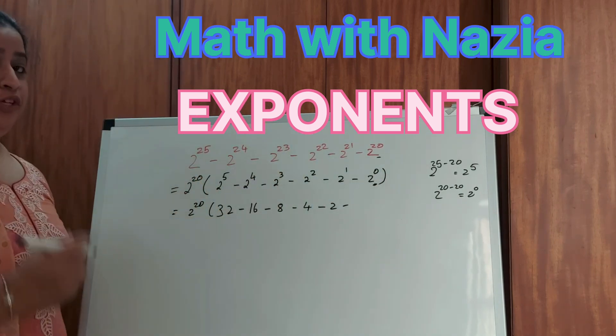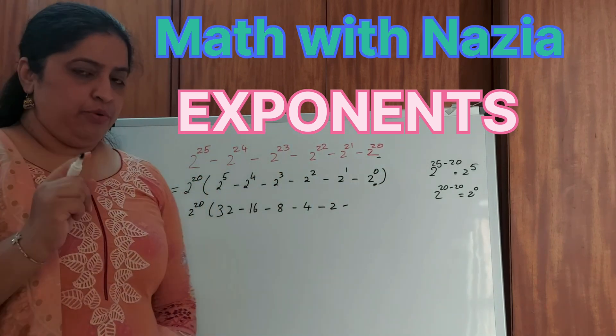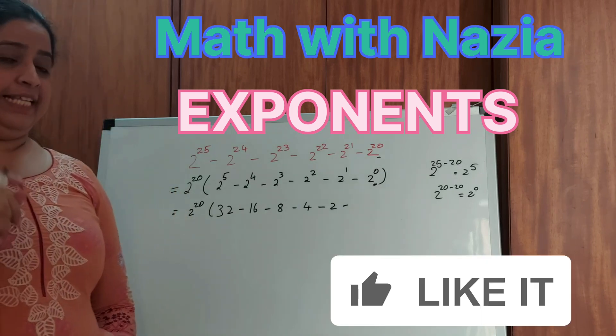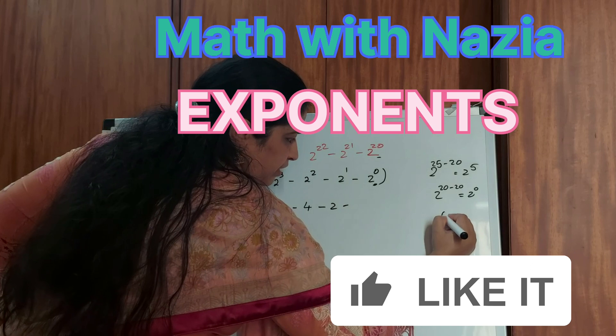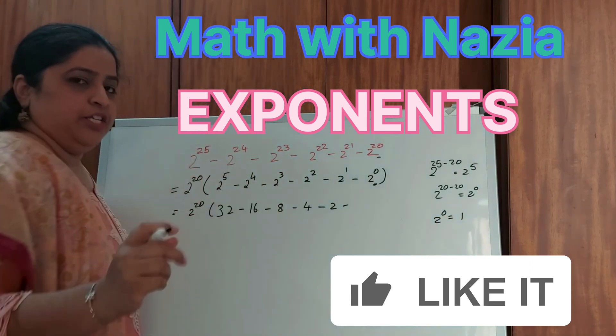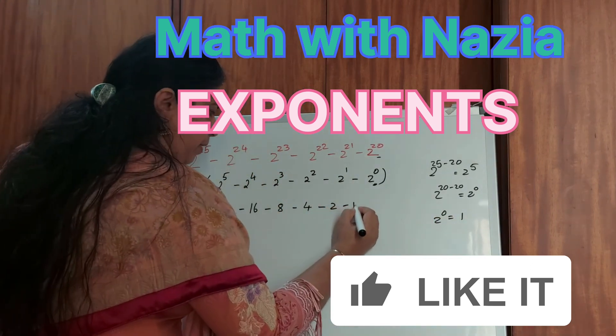What is 2 to the power of 0? Usually kids write 0, but no, it's not 0. Anything to the power of 0 is always 1. Any number to the power of 0 will always give us 1. Please remember this, 2 to the power of 0 is always 1.